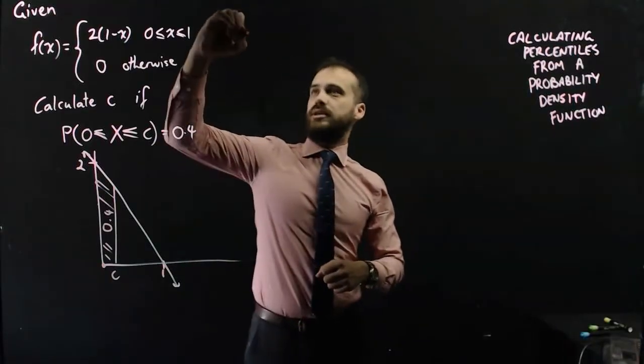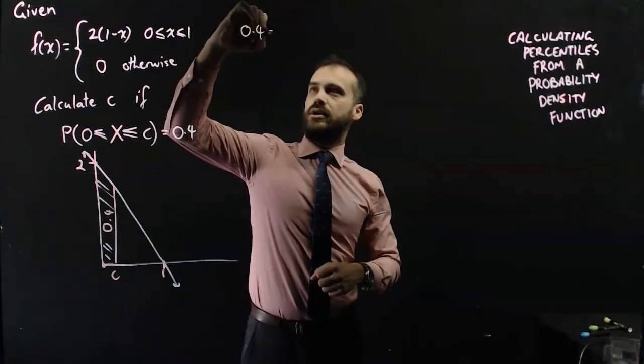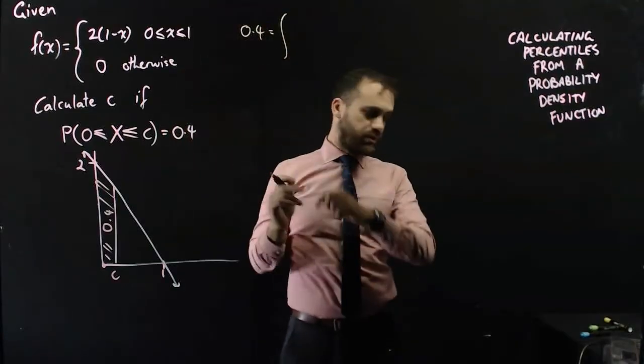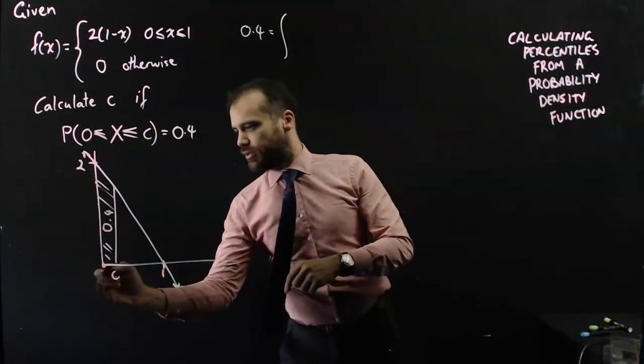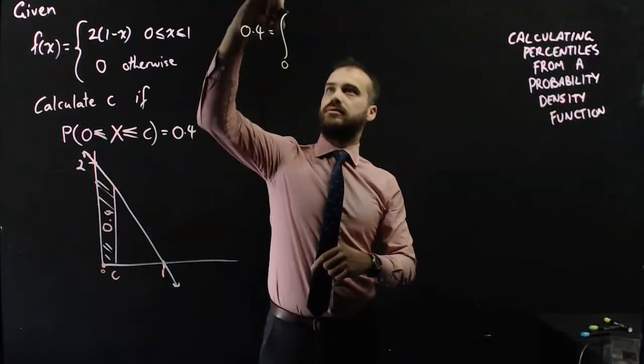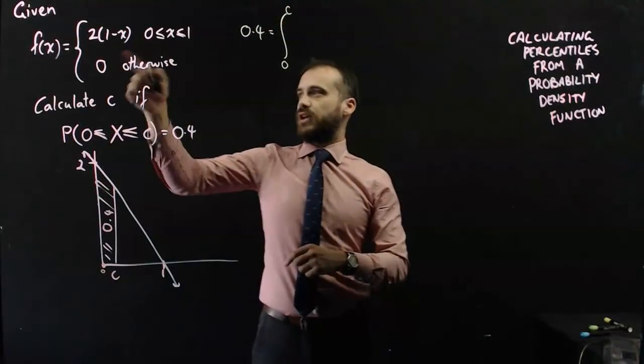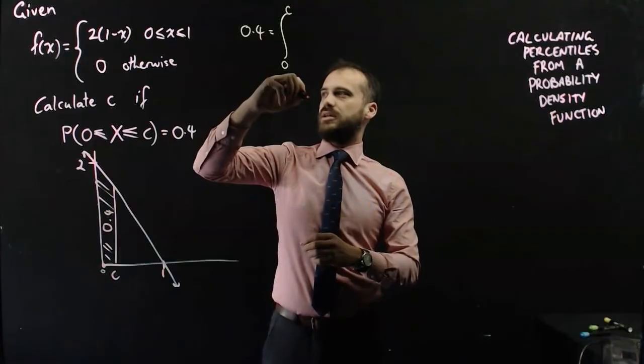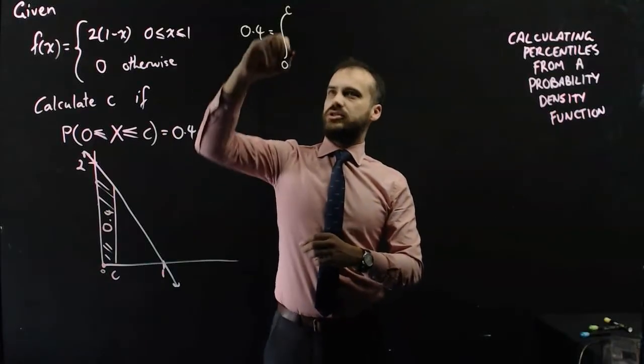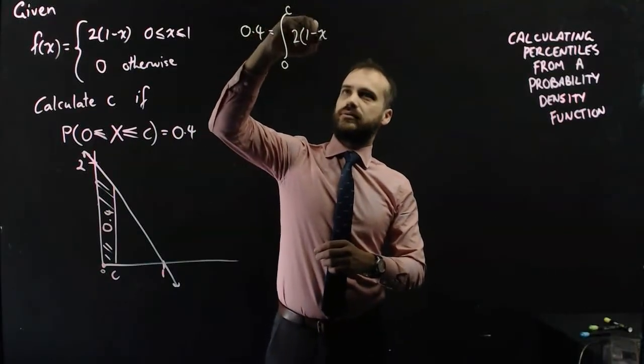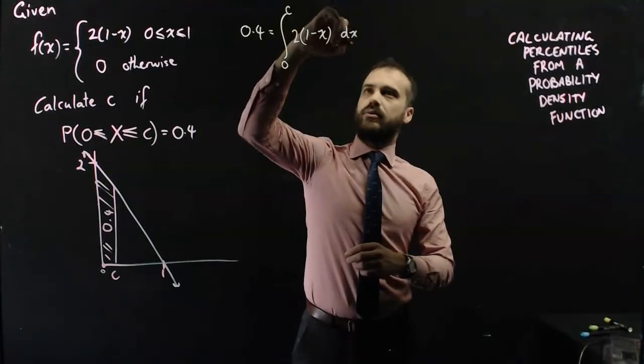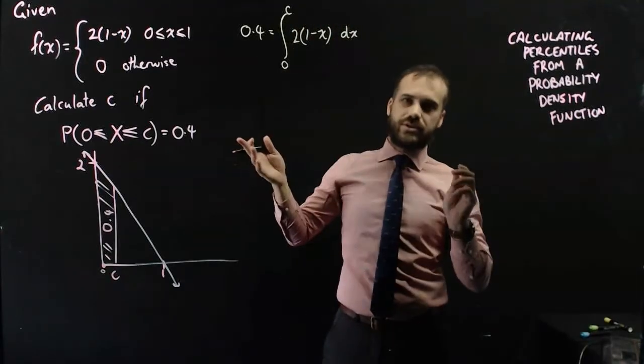So this time we know the probability is 0.4. And it's going to be equal to the integration between 0 and C of the function here, with respect to X. And now the goal here is to solve for C.